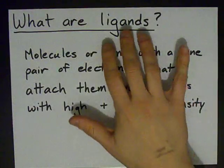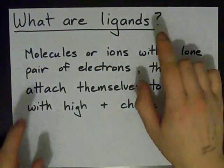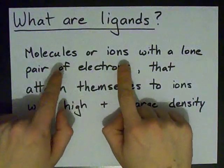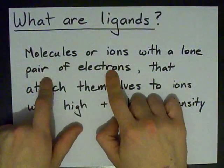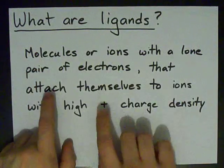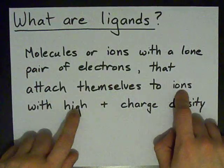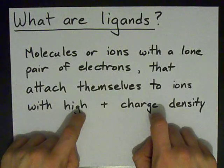Hey guys, quick little lesson about what ligands are. Ligands are molecules or ions that have a lone pair of electrons. It needs that lone pair of electrons to attach itself to an ion with a high positive charge density.